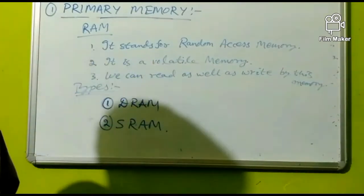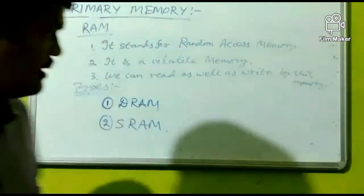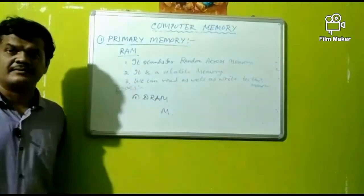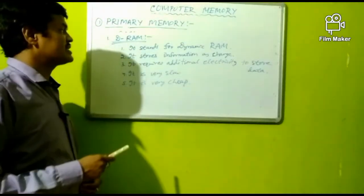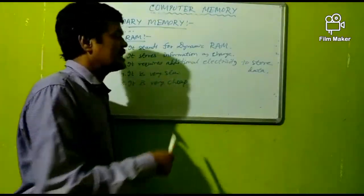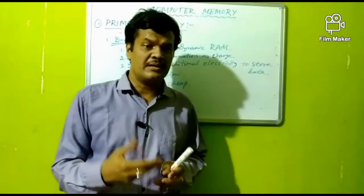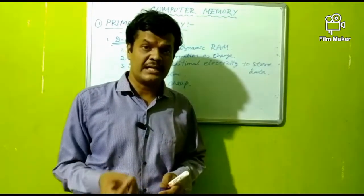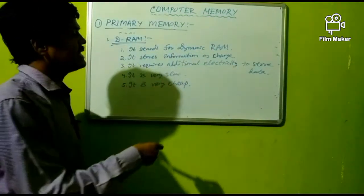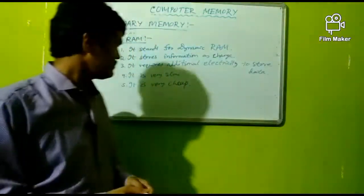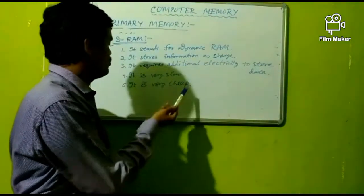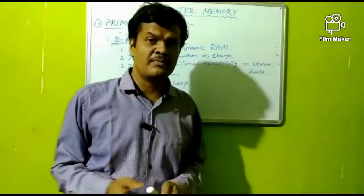DRAM stands for Dynamic Random Access Memory. It stores information as a charge, meaning information is stored in the form of an electrical charge. It requires additional electricity to store the data, so it consumes more electricity. It is very slow and the price is also very cheap.